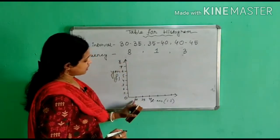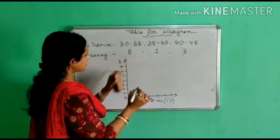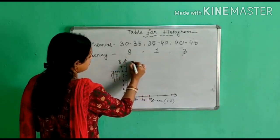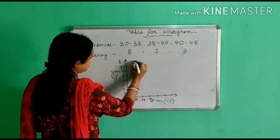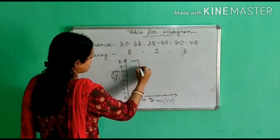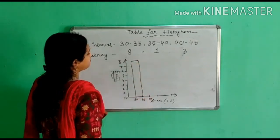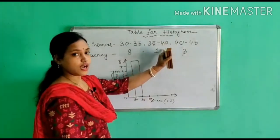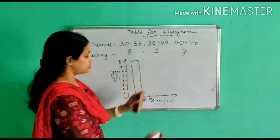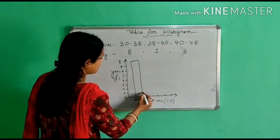Now for 30 to 35 our frequency is 8, so we just mark here and draw a first bar for 30 to 35. Then next for 35 to 40 our frequency is 1, so I'm going to mark here for 35 to 40. In this way you draw a histogram.